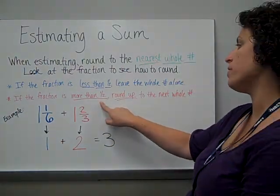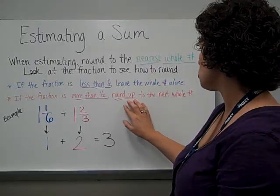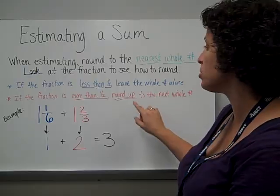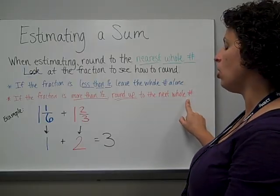If the fraction is more than 1 half, this is where we would round up or give it a shove, is what we said when we were doing whole numbers. So we'll round up to the next whole number.